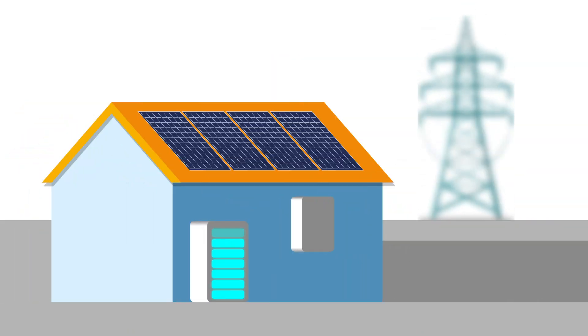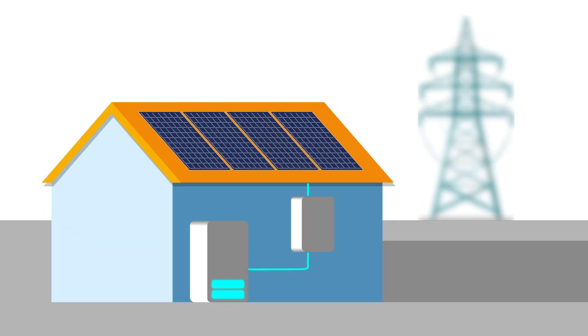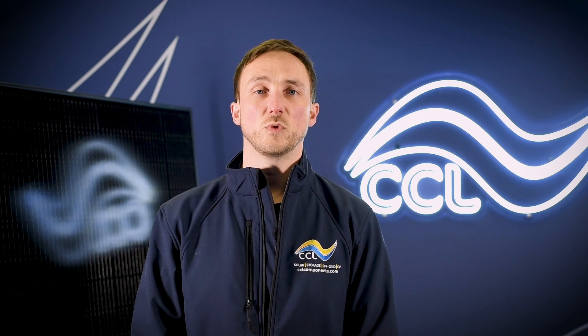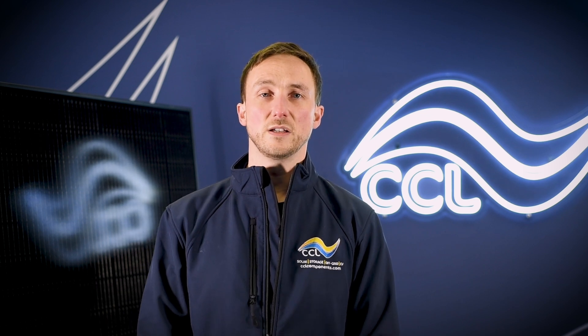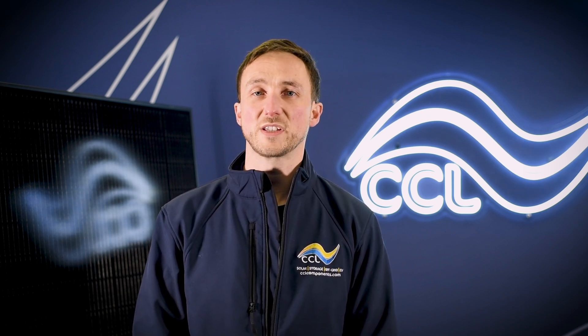In a solar and storage system, the CT provides data that helps your system make smart decisions. For example, if your batteries are charged, your system can decide to use that power instead of pulling more from the grid. Or you may want to top up your batteries when your solar is generating excess power. Without a CT, your solar and storage system will be blind to what's happening with your electricity use. That's why it's such a crucial part of your setup.